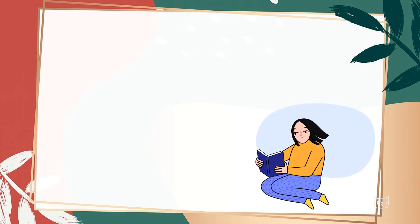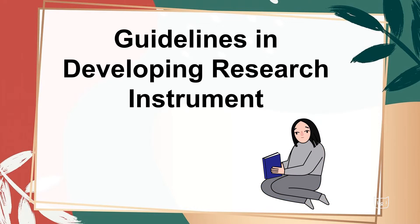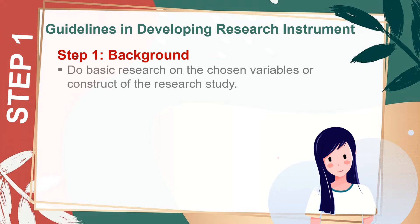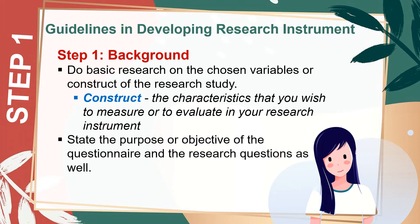Here are the given guidelines on how to develop a research instrument, according to Prieto, Naval, and Carey in 2017 and Faltado et al. in 2017. Step 1: Background. Do basic research on the chosen variables or construct of the research study. Choose a construct that you can use to create the objective of the questionnaire. A construct means the characteristics that you wish to measure or evaluate — for example, weight or academic performance. After identifying the construct, it is easy to state the purpose or objective of the questionnaire and the research questions as well.